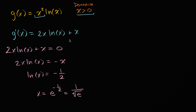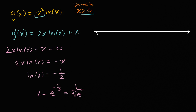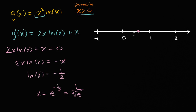Let's see what's happening on either side of this critical point. I'll draw a number line to help visualize this. Our domain starts just above zero. The critical point at one over the square root of e is a little less than one. So we have the open interval from zero to one over the square root of e, and then the interval from one over the square root of e to infinity.